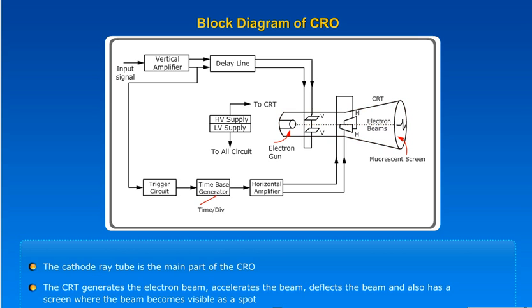The CRT generates the electron beam, accelerates the beam, deflects the beam, and also has a screen where the beam becomes visible as a spot.